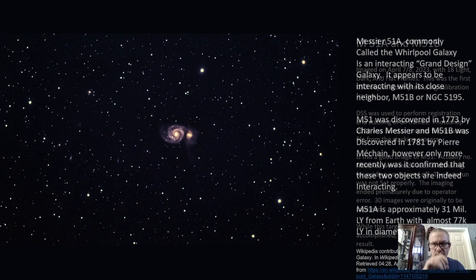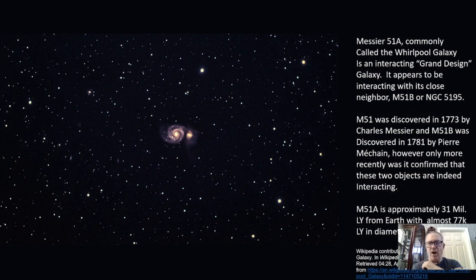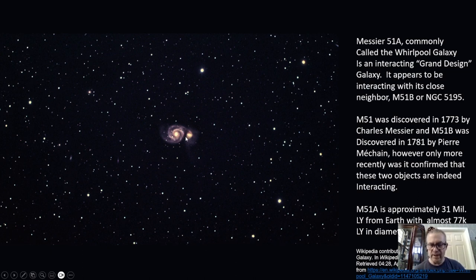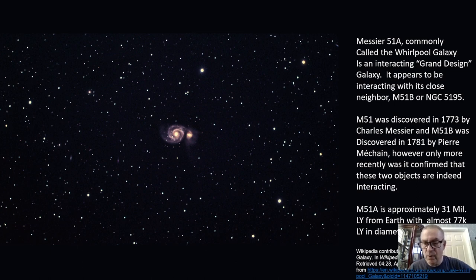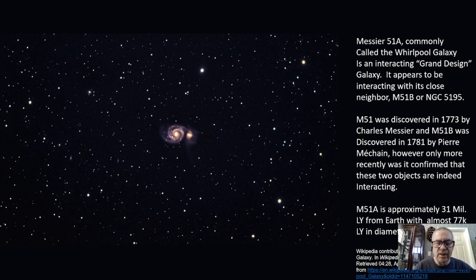M51a, commonly called the Whirlpool Galaxy, is an interacting grand design galaxy, and as you can see it appears to be interacting with its neighbor M51b, or NGC 5195. M51 was discovered in 1773 by Charles Messier, and M51b was discovered by his assistant Pierre Méchain. However, only more recently was it discovered that these two are in fact interacting — it looks like one is collecting the other's material.